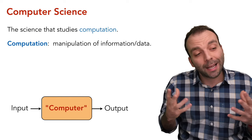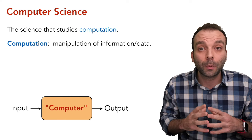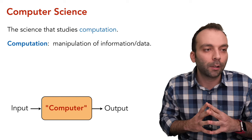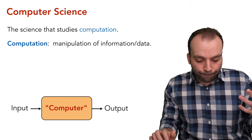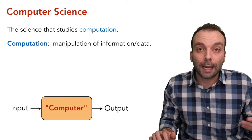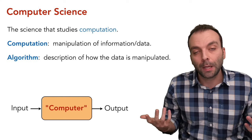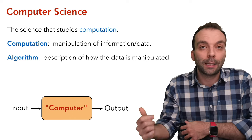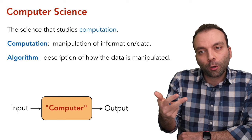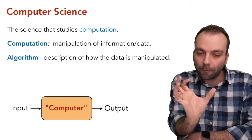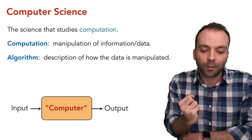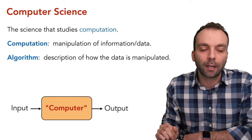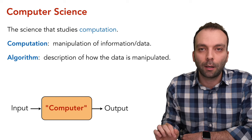Calculation is manipulation of numbers, and computation is a generalization of calculation — you're not restricted to just numbers. You can deal with audio, video, text, and other kinds of information. An algorithm is a precise, step-by-step description of how data is manipulated by the computer. When we say 'computer' we usually mean a physical device, and the algorithm is like the specification of that device. In this course, algorithm and computer are essentially synonyms — we'll stay in the mathematical world.